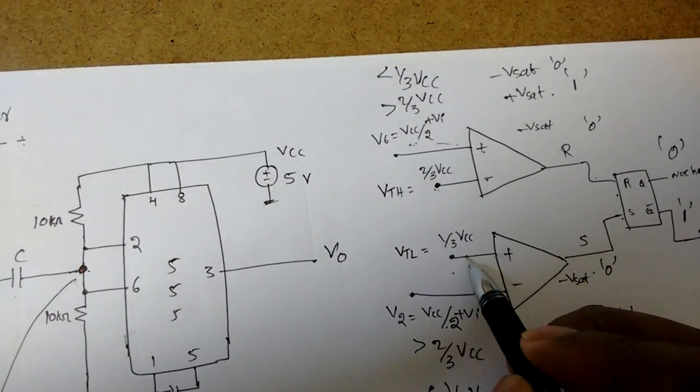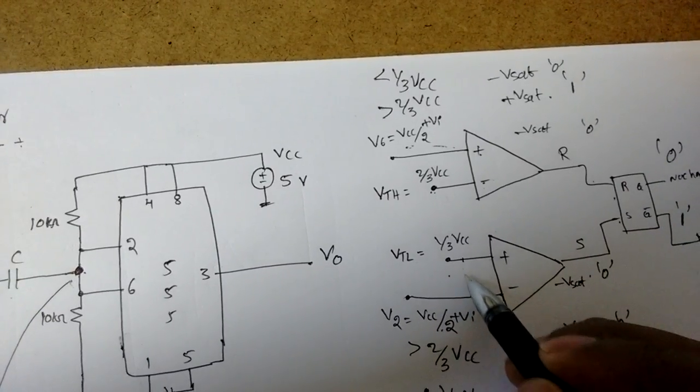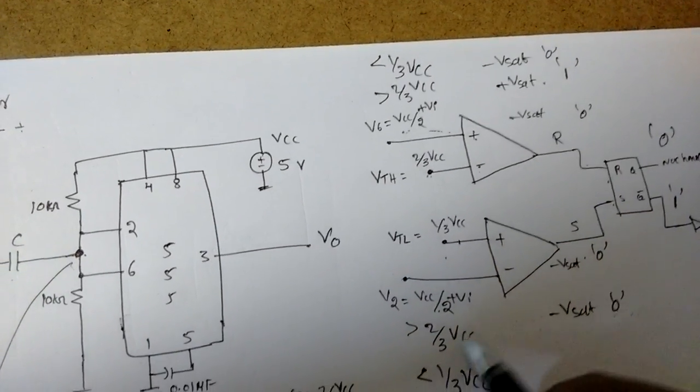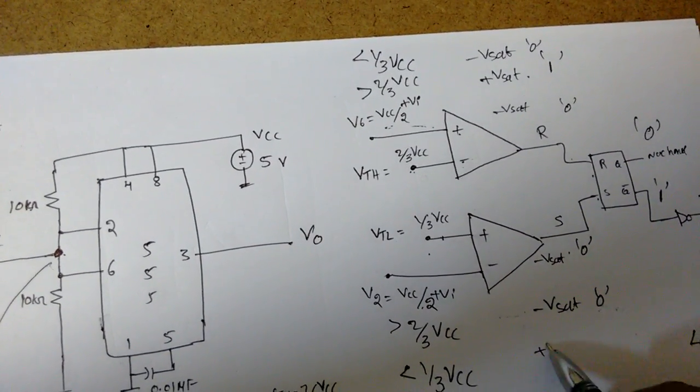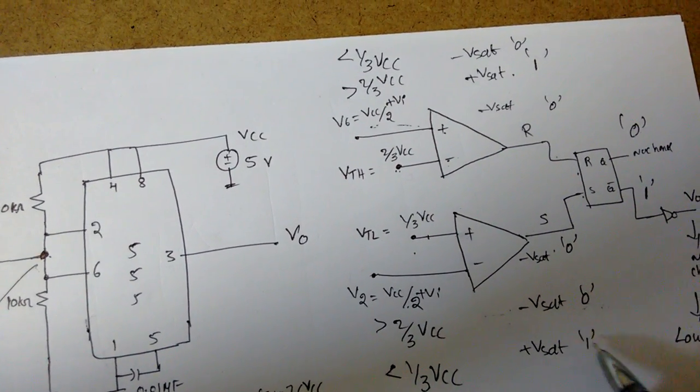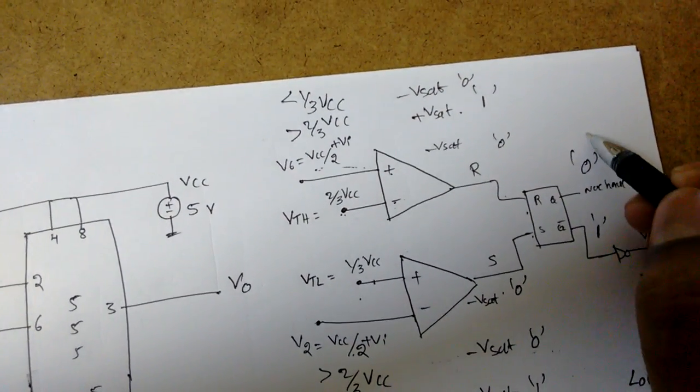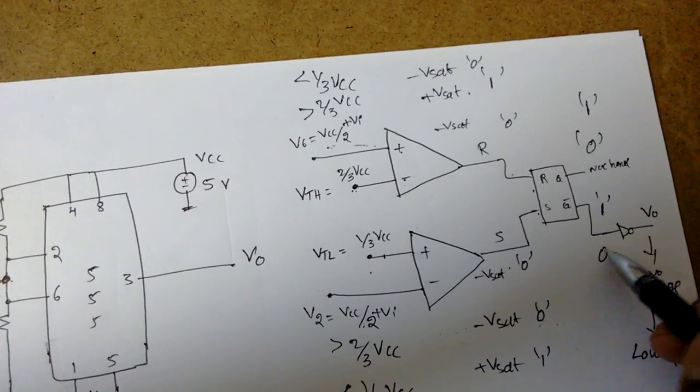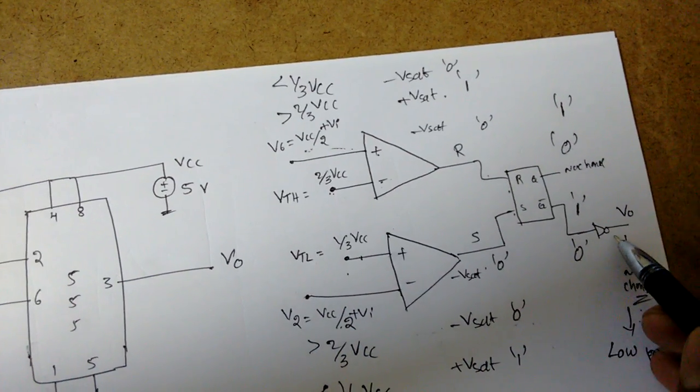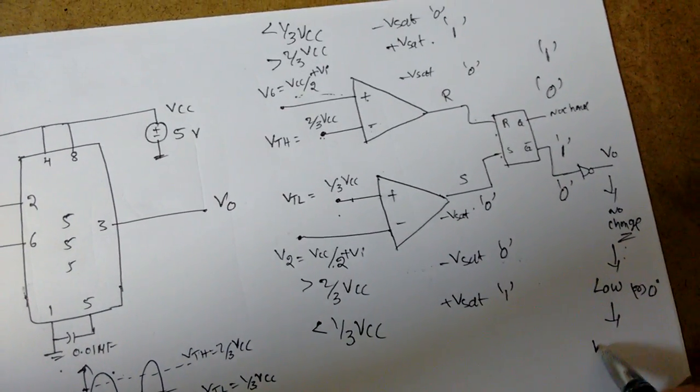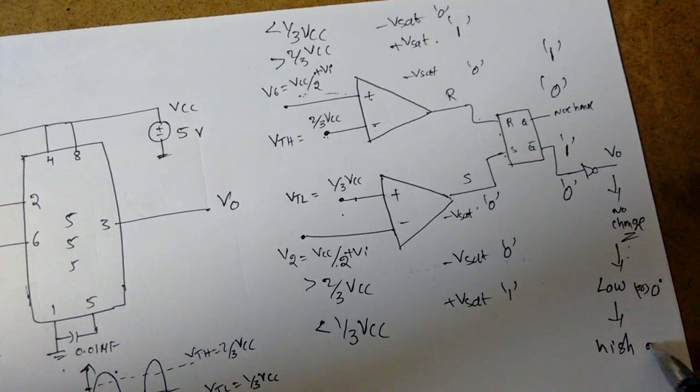Here, less than 1 by 3 VCC - that is positive is greater now. See, plus is connected to 1 by 3, but minus is connected less than 1 by 3. So it will become plus Vsat or logic 1. That is S is equal to 1, R is equal to 0. So S is equal to 1 means Q will become 1, Q bar will become 0. So Q bar is given to inverter, so output will become what? High, or logic 1.